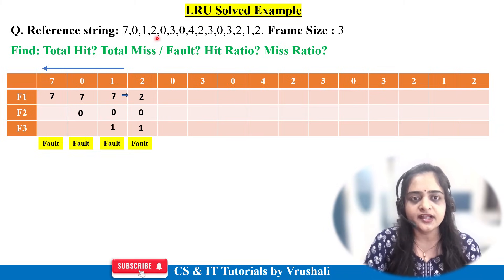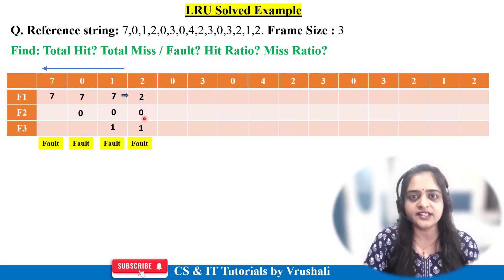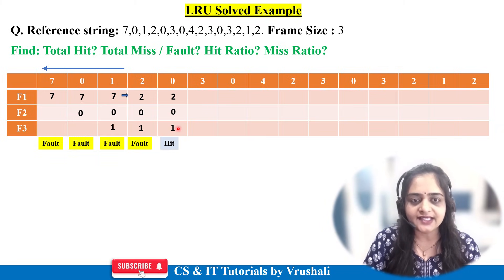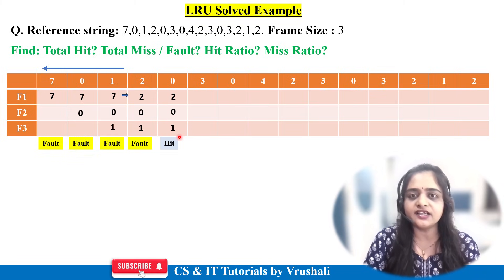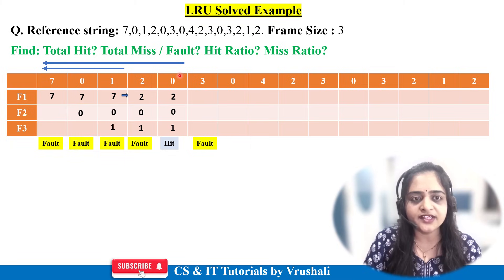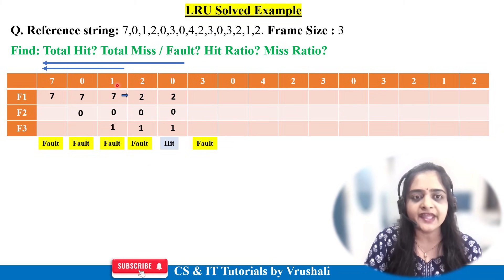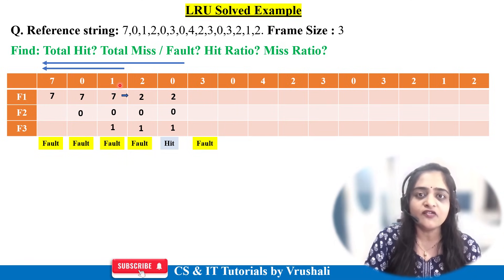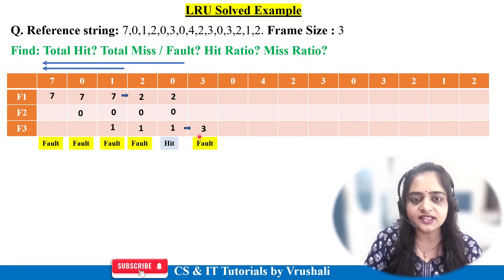Next is page number 0. Page 0 is already present in memory — that is a page hit. Write down the data as is. Next is page number 3. Page 3 is not present in memory — page fault occurs. The operating system tracks the previous pages: 2, 0, and 1 are in memory. The most recently used is 0, then 2, then 1. The least recently used is 1. So replace page 1 with page 3, and keep the remaining data as is.